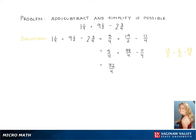Now adding and subtracting these, we get 32 over 4, and 32 over 4 is 8.